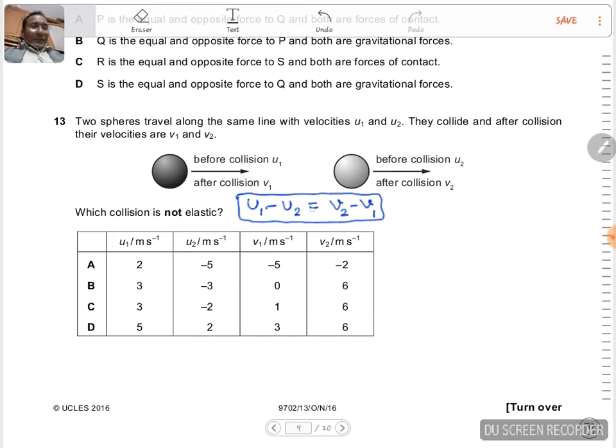Let us apply these conditions to all the values. In the first case, case A, we have u1 minus u2 is equal to 2 minus negative 5, which is equal to 2 plus 5, that is 7. And here we have v2 which is negative 2 minus negative 5, so negative 2 plus 5 equals 3. So 7 is not equal to 3, this is not possible.